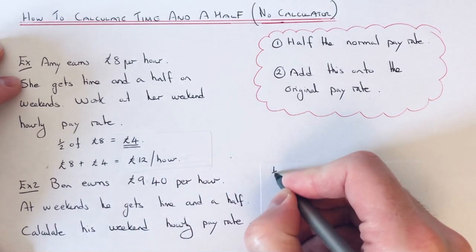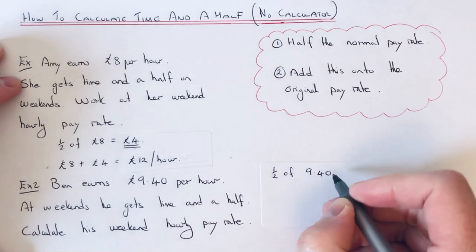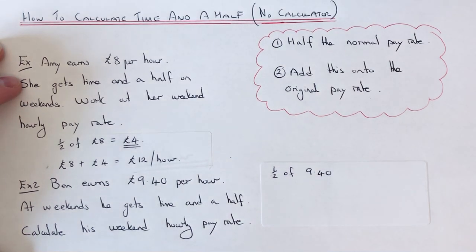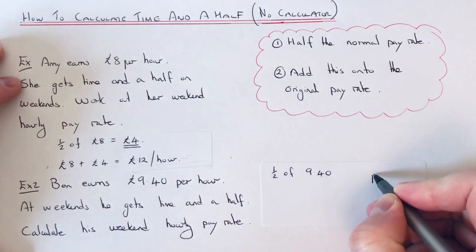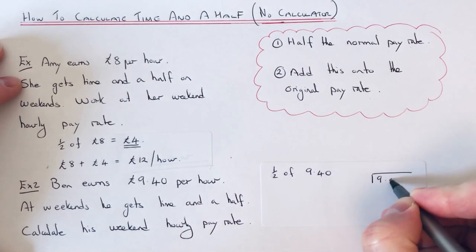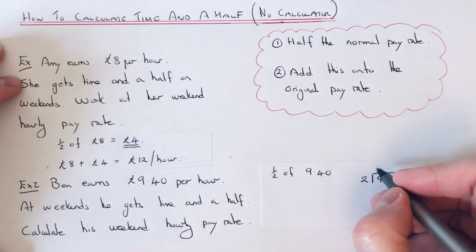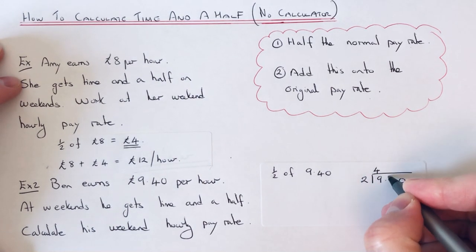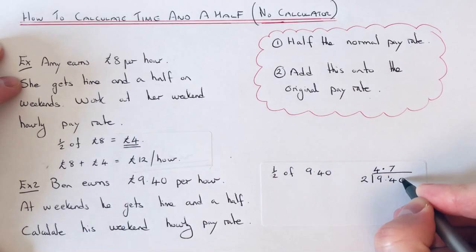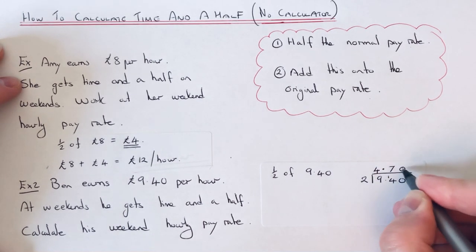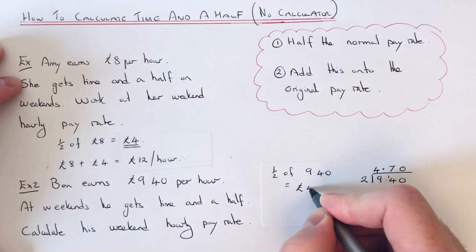Our first step is to half nine pound forty. Remember, if you're having trouble halving this number, just do a little bit of short division on the side of your page. Nine divided by two is four remainder one, fourteen divided by two is seven, zero divided by two is zero. So half of nine pound forty is four pound seventy.